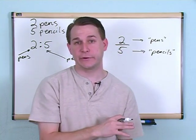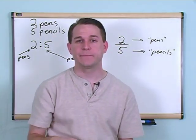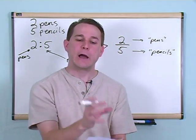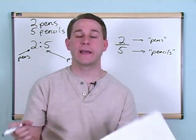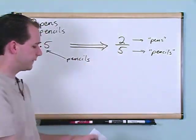So what this is telling you here, this ratio as we call it, is it's kind of telling you how many of something you have compared to how many of something else. In this case, it's pens and pencils.